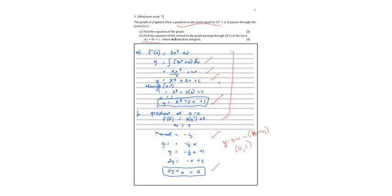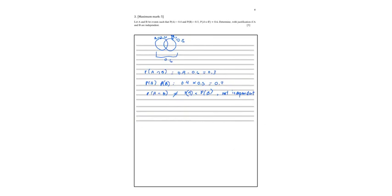For problem number 3, let a and b be events such that probability of a equals 0.4, probability of b equals 0.5, and the probability of the union of a and b is 0.6. Determine with justification if a and b are independent. So if we're going to figure out how that looks like, there is a union of a and b. But the union of a and b here is 0.6. But our a is 0.4 and our b is 0.5. We may say there is an intersection, an overlapping. So the probability of a intersection b, if a union b, if they are mutually independent, it will be 0.9. But here the total is 0.6. So there is an intersection of 0.3.